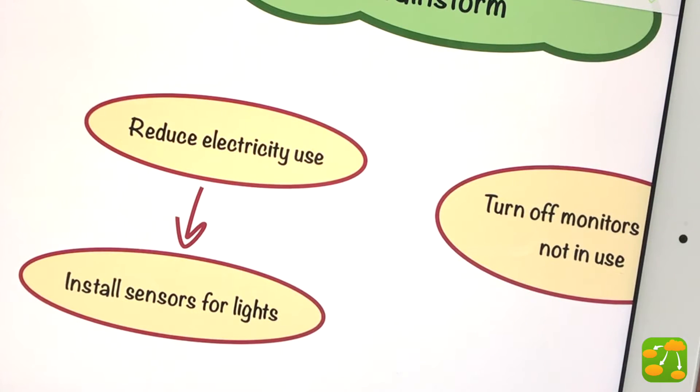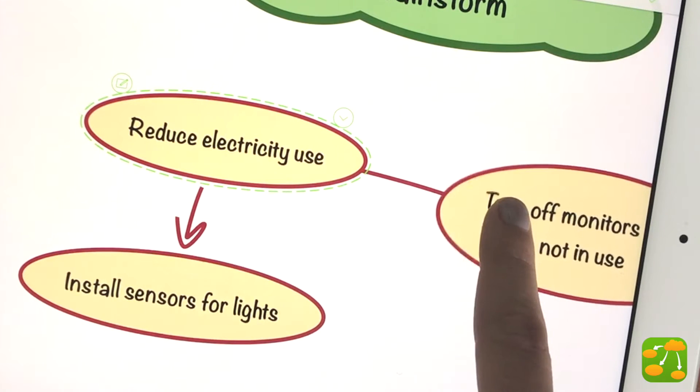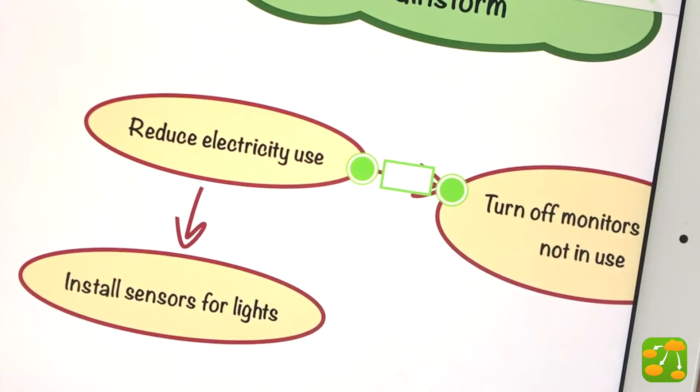To link one existing idea symbol to another, drag that same arrow handle I just showed you from the symbol to the symbol you would like to connect. You will see it wiggle, signifying that the symbol is ready to connect.